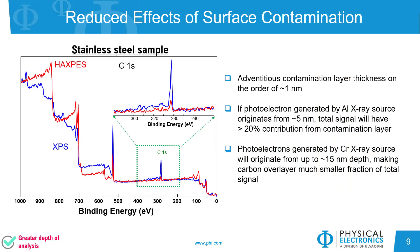A common feature in XPS spectra for samples handled in air are adventitious carbon and oxygen. As shown on this steel sample, they can make up a significant portion of the analysis volume and attenuate your peaks of interest. With the increased depth of analysis in HAXPES, surface contamination makes up a smaller fraction of the detected signal and reduces the need for surface cleaning that could potentially damage the surface.